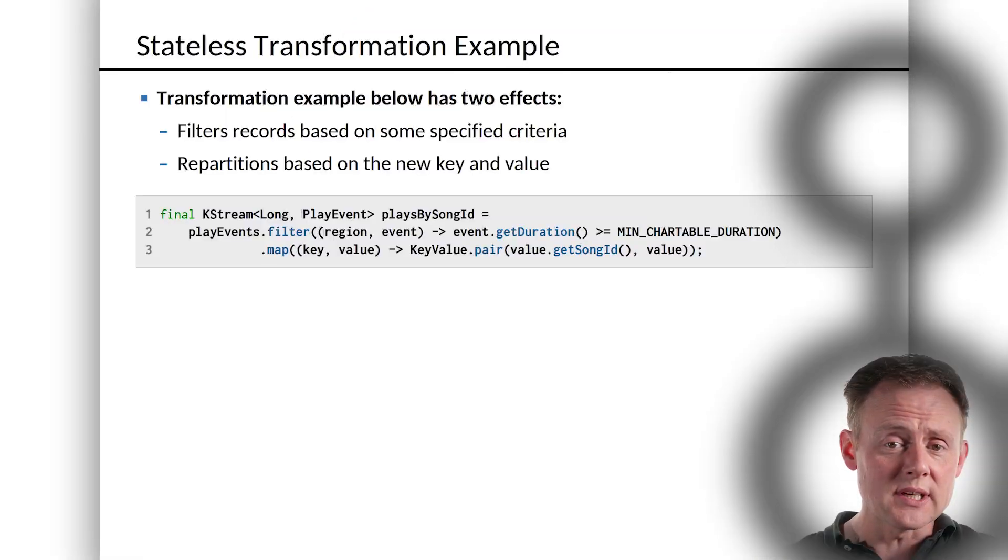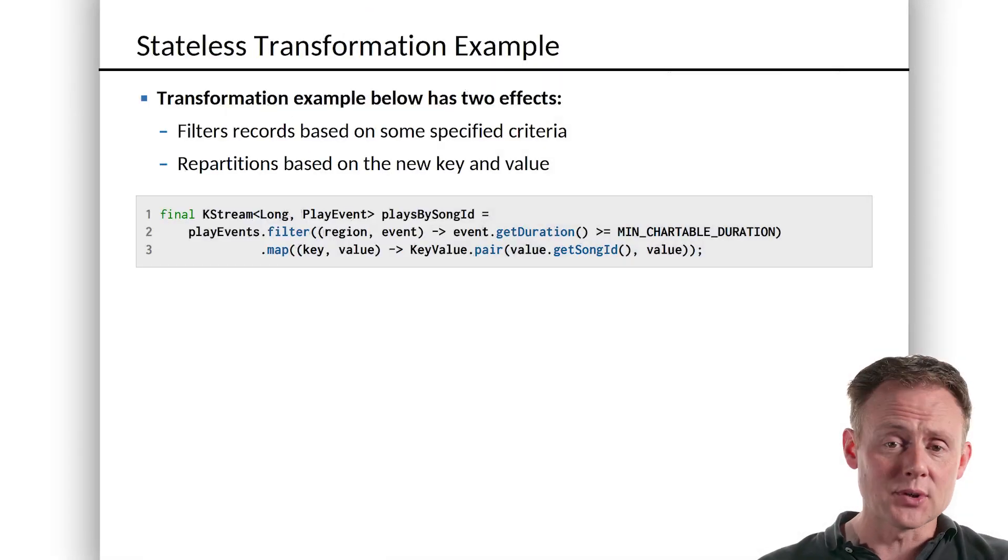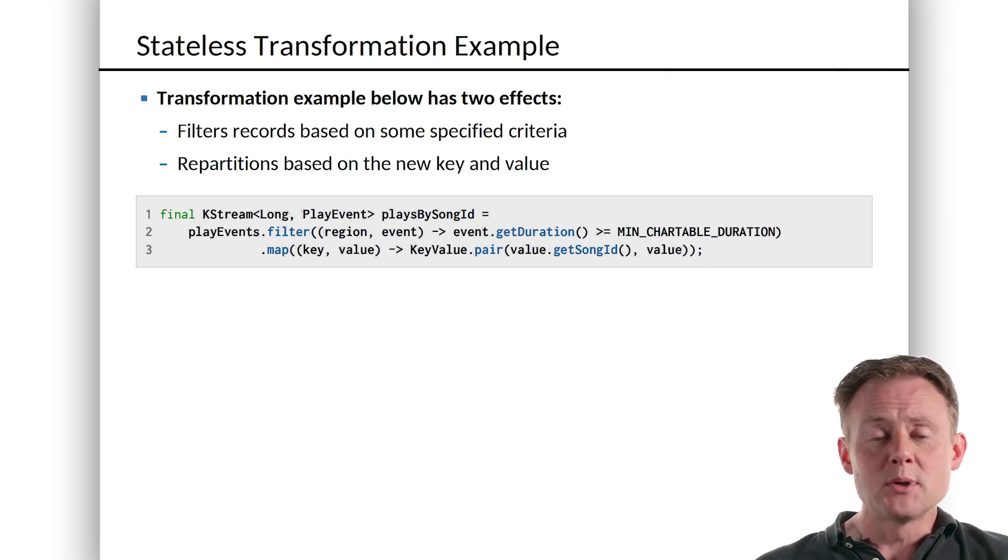Filtering is an example of a stateless transformation. When you take a stream and you filter it, in effect, you have created a new stream. It's not like you've modified the old one. It's still there, but you've created this new stream that only has the records in it that meet the filtering criteria.